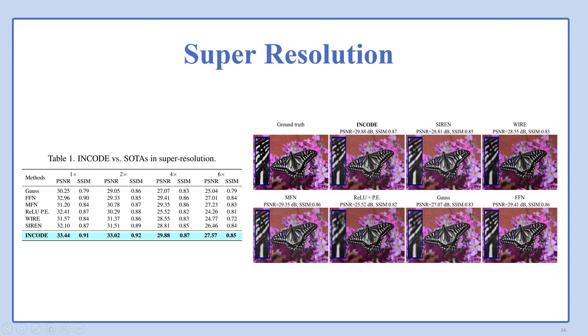Experiments across different super-resolution levels—one time, two times, four times, and six times—consistently show that ENCODE outperforms alternative methods in terms of PSNR and SSIM values. ENCODE excels in preserving sharper image details, setting it apart from other methods that often give blurry results. Here is a result for four times single image super-resolution.